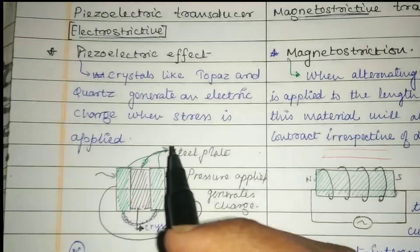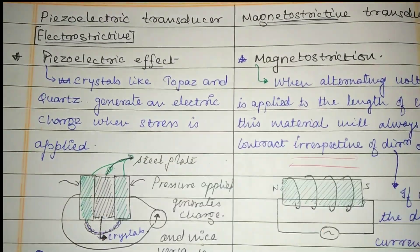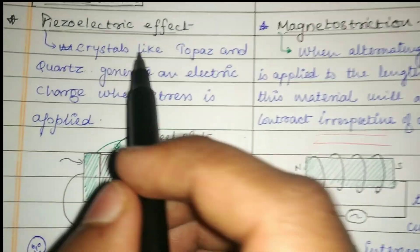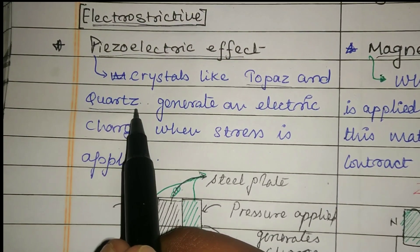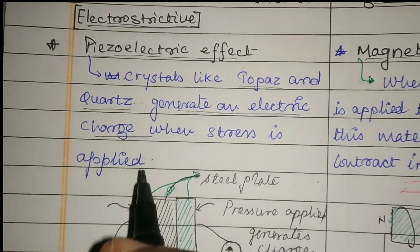Electrostrictive transducers work on the principle of piezoelectric effect, whereas magnetostrictive transducers work on the principle of magnetostriction. What is piezoelectric effect? Crystals like topaz and quartz, when put under pressure, generate an electric charge, and vice versa is also possible.